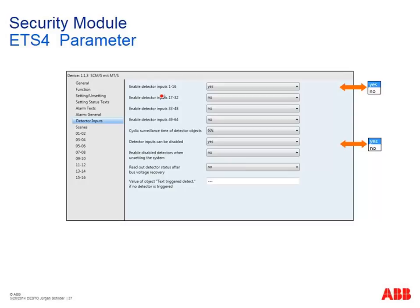In the zone parameters, up to 64 zones can be enabled in groups of 16. Cyclical monitoring of security terminal signals can be set — for example, every 60 seconds the terminal must send the input status. Zones can be disabled via a parameter or via a 1-bit group address — for example, disabling group 4 switches off all inputs assigned to that group so they make no alarm.